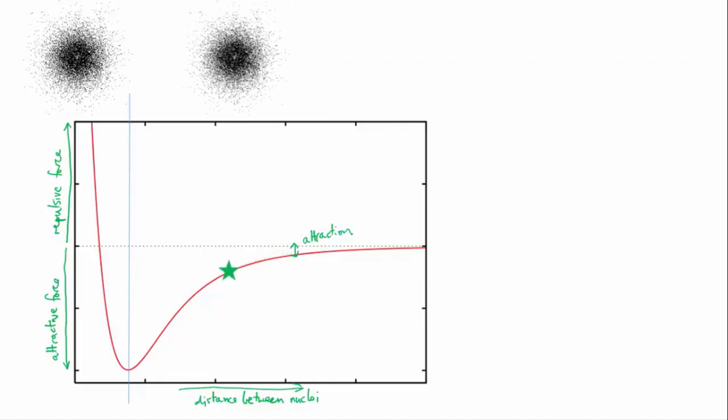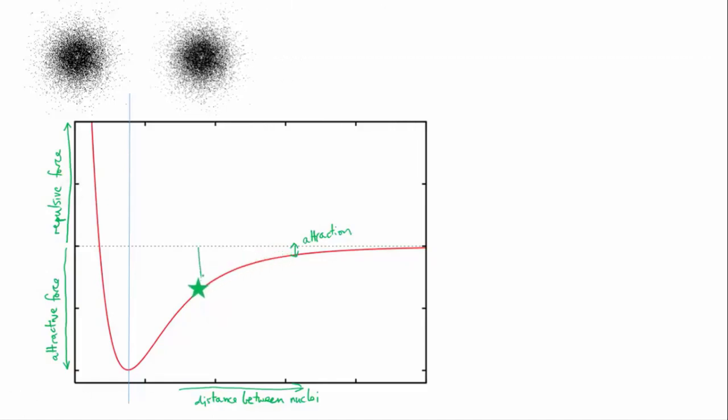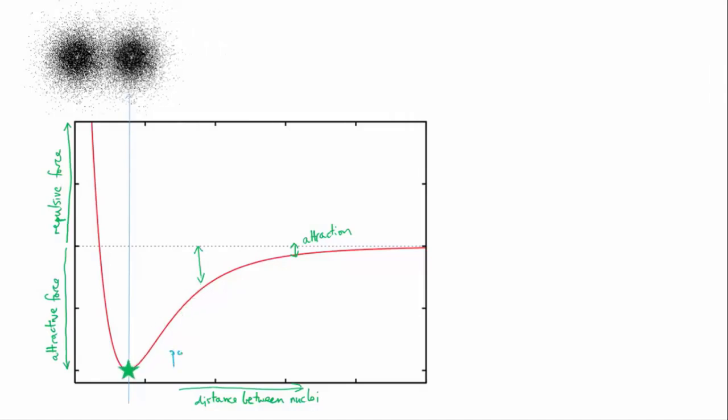You can see our line is dropping further below the middle of the graph. At this point, the nuclei are not repelling each other because they're shielded from each other by their electron clouds. The atoms continue to get closer until the point of maximum attraction is reached. The atoms are now at their preferred distance, and the attraction is strong. We would say at this point that a bond has formed.